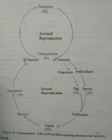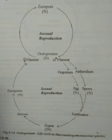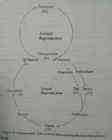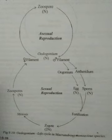Another asexual spore is the aplanospore, which is a non-motile, non-flagellate spore produced in aplanosporangia. Aplanospores are produced during the dry season, and during favourable conditions they germinate into a new plant. Sometimes the vegetative cell stores plenty of reserved food and secretes a thick wall around itself; these thick-walled cells are called akinetes. During favourable conditions, akinetes also germinate into a new plant.